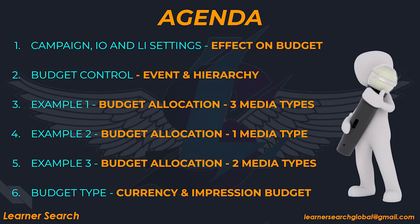The agenda of this video: firstly, I will show you campaign IO and line item settings and how they affect budget allocation. Secondly, we shall take a real-time event as an example to understand budget control and compare it with platform hierarchy. Then, I will explain this concept by taking various examples.